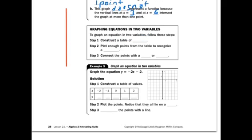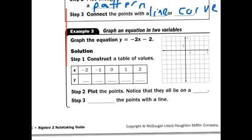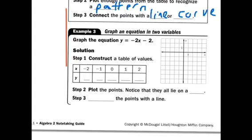Graphing equations in two variables. First thing you're going to do is construct a table of values. And that's like when we did in 6th, 7th grade, we made a T table, right? And you're going to plot enough points from the table to recognize a pattern. And then you're going to connect all of the dots with a line or a curve. So let's take a look at what that might look like on example three here.